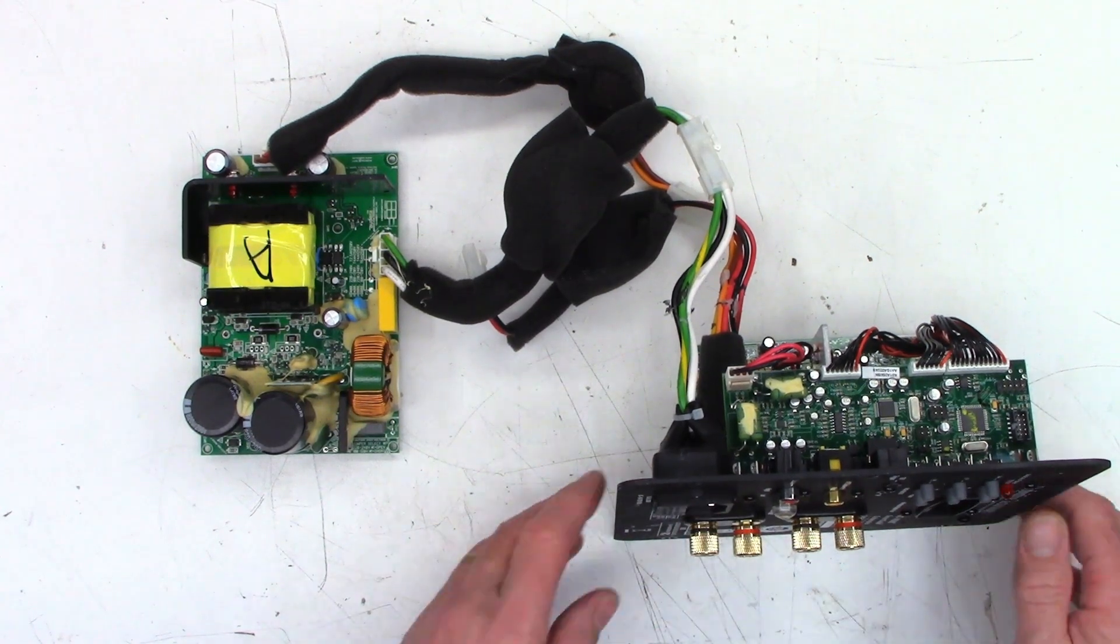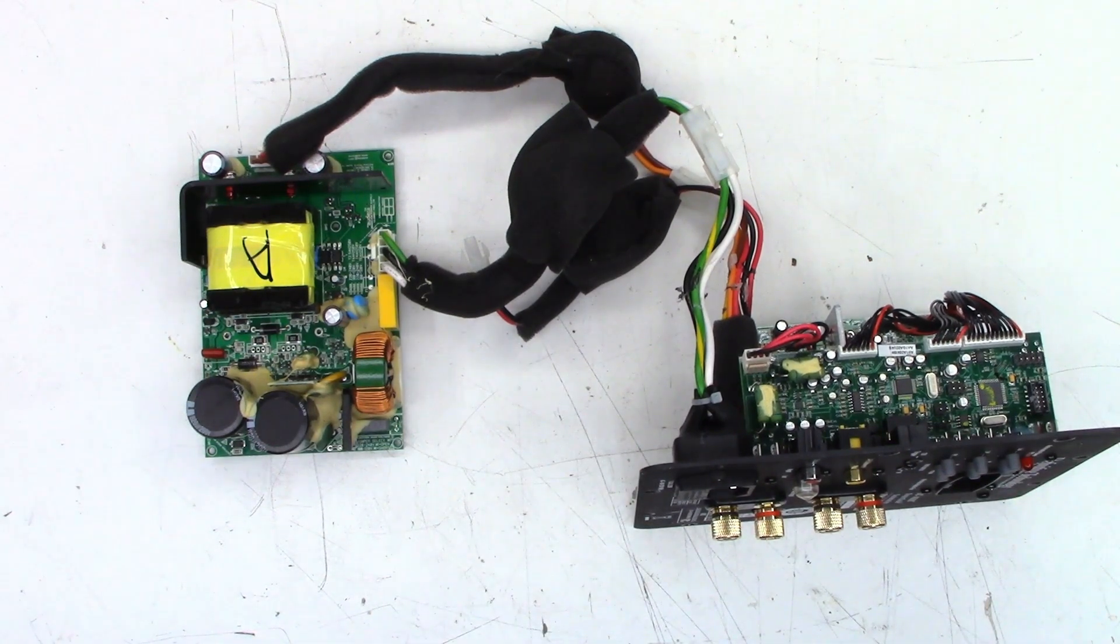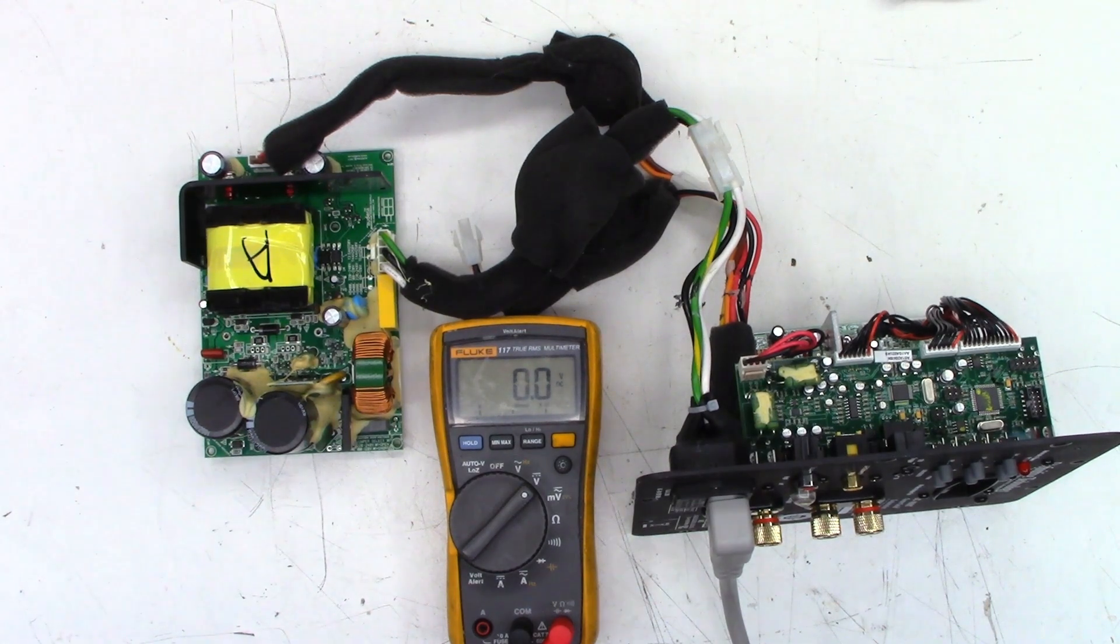So let me grab a cord, plug it into here and hook it up to the Variac and we'll see what happens. Okay, cord is connected and I do have the AC input turned down to about 75 volts. So let's go ahead and power this thing on. I'm going to put my Variac on amps and just see if we get a horrendous amp draw. I don't expect anything actually.